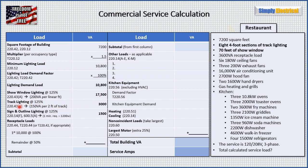Next, track lighting: per 220.43B, we need 150 VA per two feet of track. We have eight four-foot sections, so 8 times 4 gives us 32 total feet. Dividing by 2 gives us 16, and 16 times 150 VA is 2,400 VA. Adding the extra 25% for continuous load takes us to 3,000 VA.